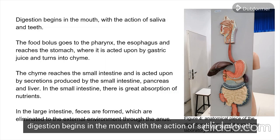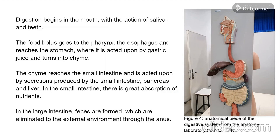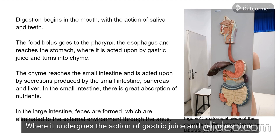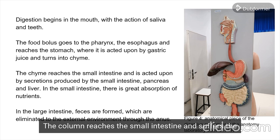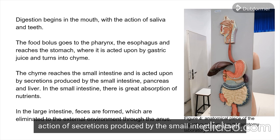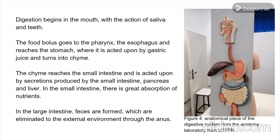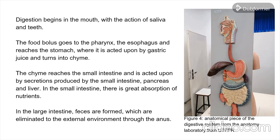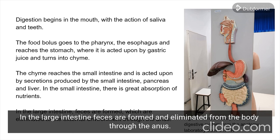Digestion begins in the mouth with the action of saliva and teeth. The food bolus travels up the pharynx, down the esophagus and into the stomach, where it undergoes the action of gastric juice and becomes chyme. The chyme reaches the small intestine and suffers the action of secretions produced by the small intestine itself. The small intestine absorbs a lot of nutrients. In the large intestine, feces are formed and eliminated from the body through the anus.